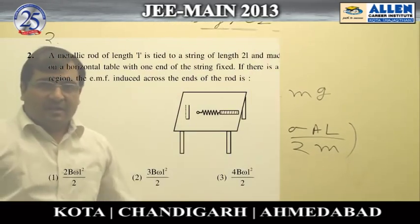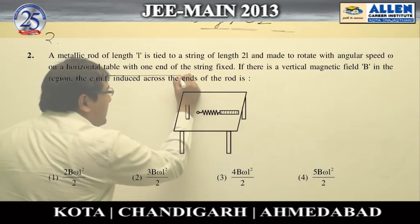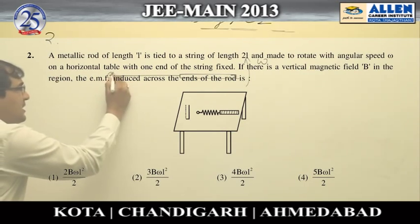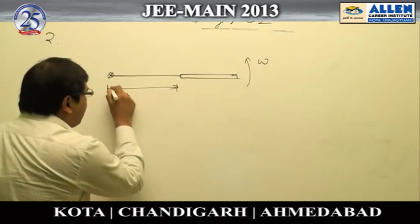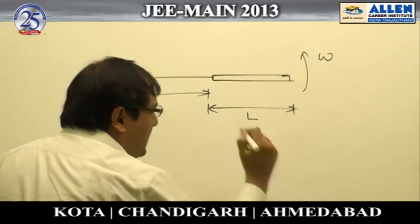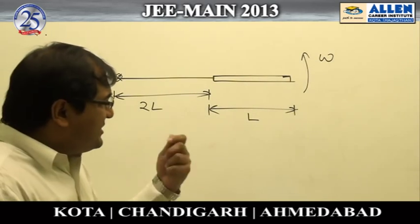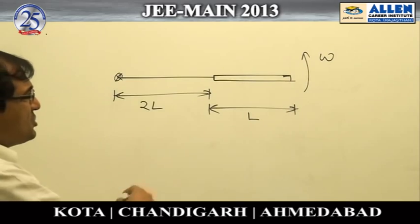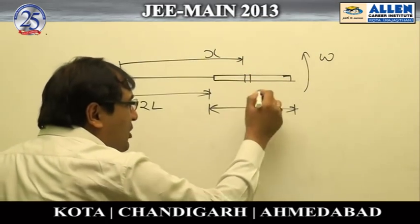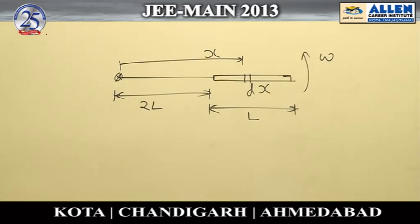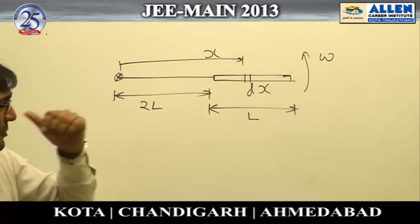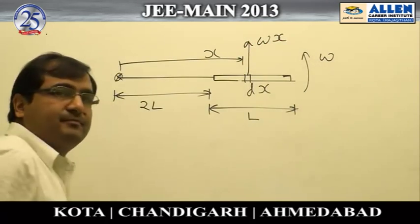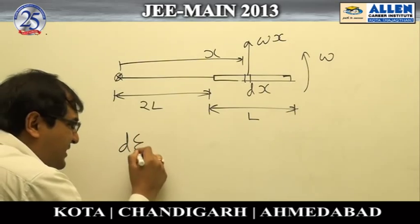Now we look at the solution to question number two. There is a metallic rod undergoing circular motion, tied to a rope of length 2m; the length of the rod is L. The key point is that all parts of the rod move with different velocities, so when we write the motional EMF, we must write it differently for different parts. At distance x, we have an element of length dx moving with velocity ωx.